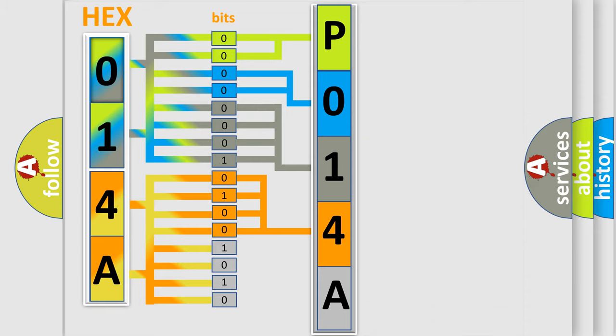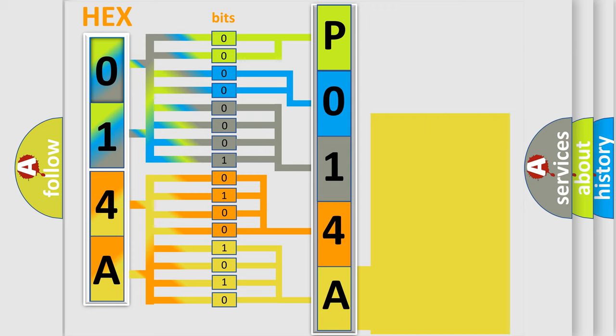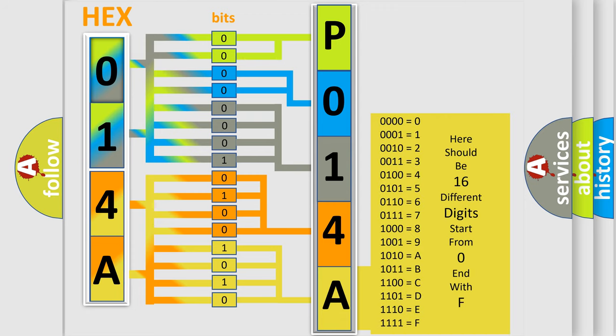The second byte is composed of a combination of eight bits. The first four bits determine the fourth character of the code, and the combination of the last four bits defines the fifth character. A single byte conceals 256 possible combinations. We now know in what way the diagnostic tool translates the received information into a more comprehensible format.